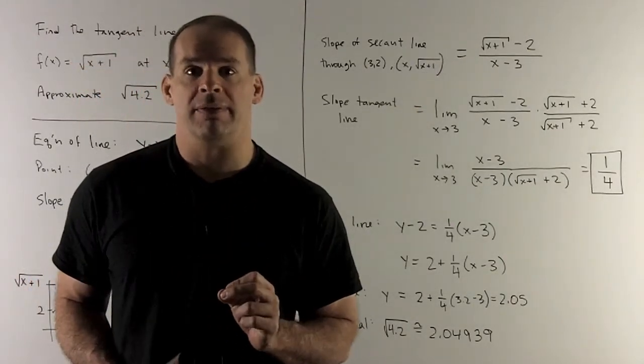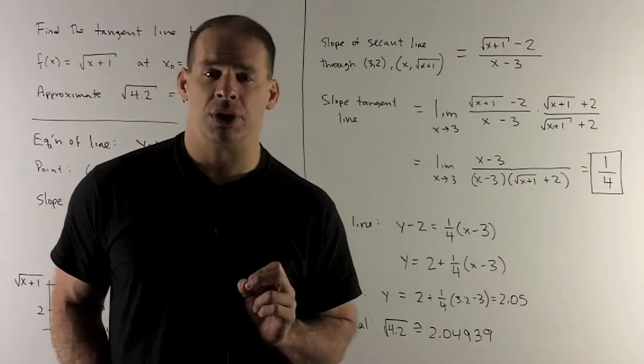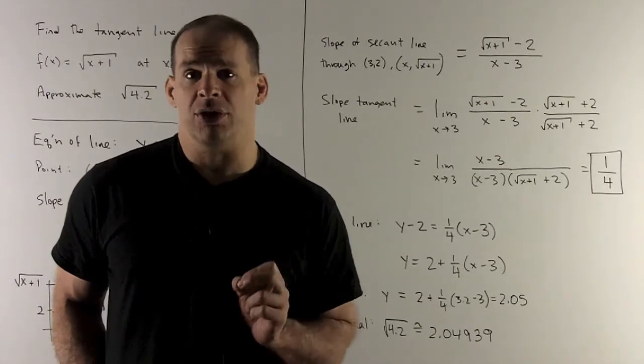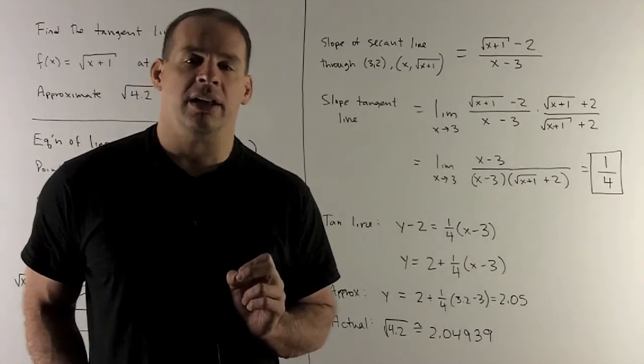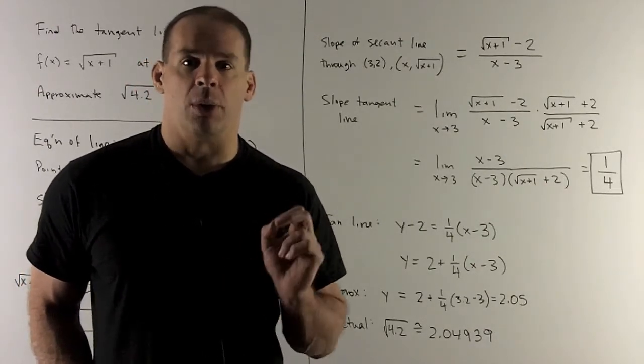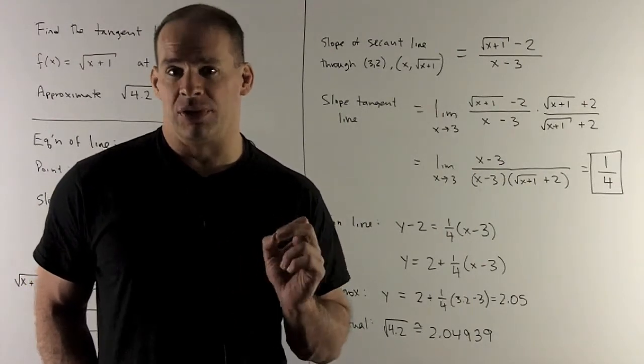Now, I want to take the limit of that as x goes down to 3. If we put 3 into those top and bottom, we're going to get 0/0. So we have an indeterminate form, which means we need to do more work. It's not clear how to get that x - 3 in the bottom to disappear. So we only have one trick at our disposal here, which is a difference of two squares.